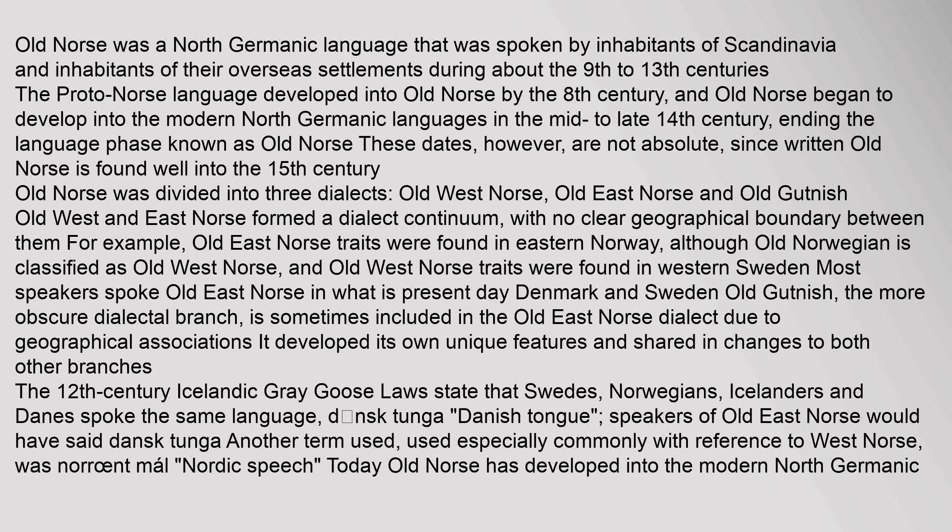Old Norse was a North Germanic language spoken by inhabitants of Scandinavia and their overseas settlements during about the 9th to 13th centuries. The Proto-Norse language developed into Old Norse by the 8th century, and Old Norse began to develop into the modern North Germanic languages in the mid to late 14th century, ending the language phase known as Old Norse. These dates, however, are not absolute, since written Old Norse is found well into the 15th century. Old Norse was divided into three dialects: Old West Norse,